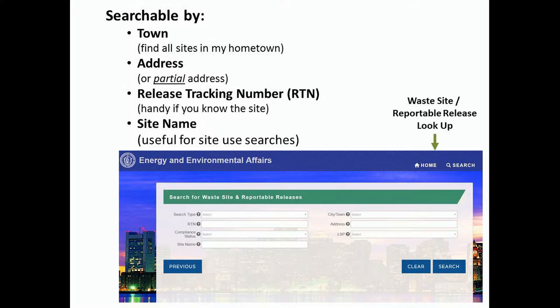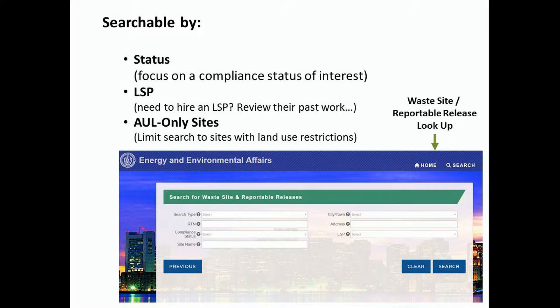You can search this application by town name, site address, and release tracking number, all of which are pretty standardized. Or you can search by the site name, which is somewhat random. You can also search by site status, which means where they are in the cleanup process, or by the LSP — licensed site professional — who is working on the project. You can also limit your search to those sites that have activity and use limitations, or AULs.